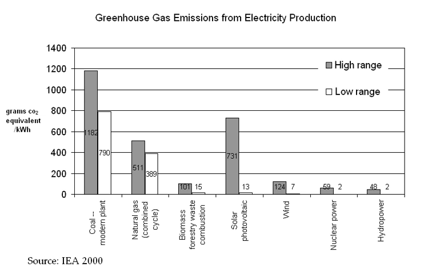One way of estimating the cost of reducing emissions is by considering the likely costs of potential technological and output changes. Policy makers can compare the marginal abatement costs of different methods to assess the cost and amount of possible abatement over time. The marginal abatement costs of the various measures will differ by country, by sector, and over time.